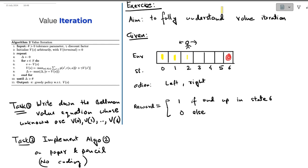At the corners though, if you are at 0 and you take the action left, you will stay at 0. If you are at 6 and you take the action right, you will stay at 6. That's the states and the actions.